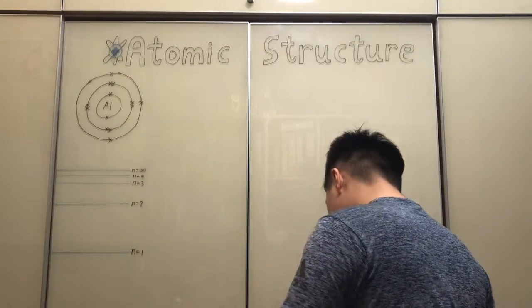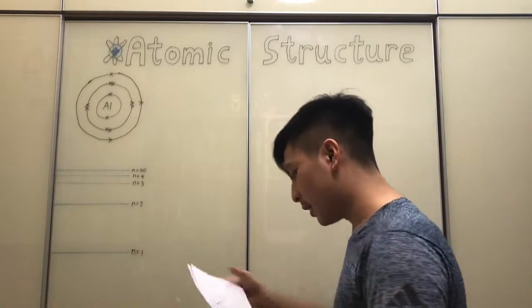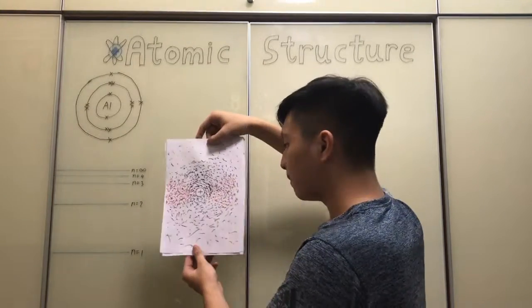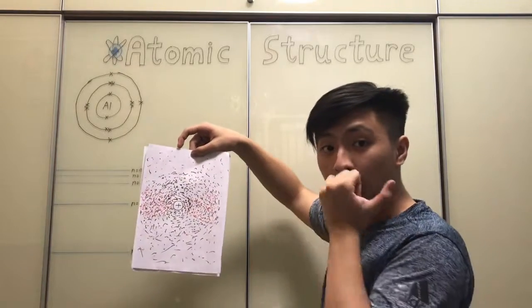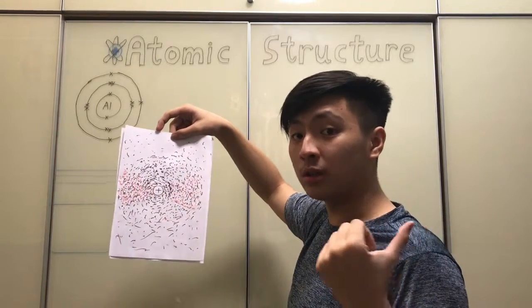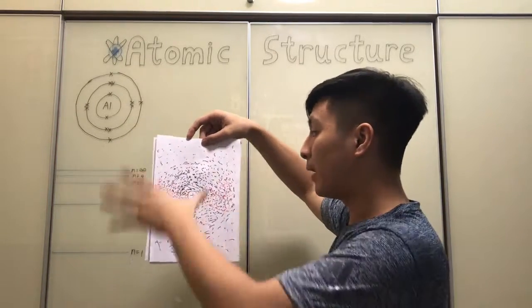I actually got a couple pictures I want to show you today. So, this picture here, this is what we call an electron density diagram, so it basically maps out all the possible locations of an electron within the domain of an atom.